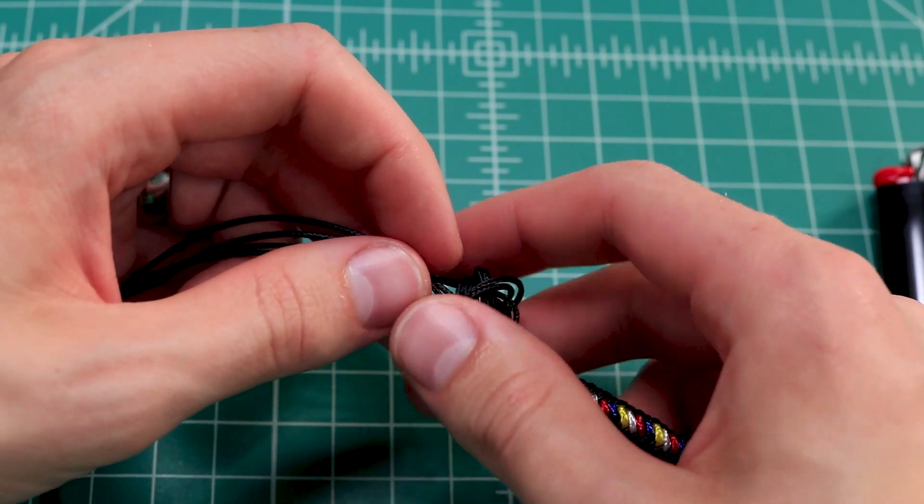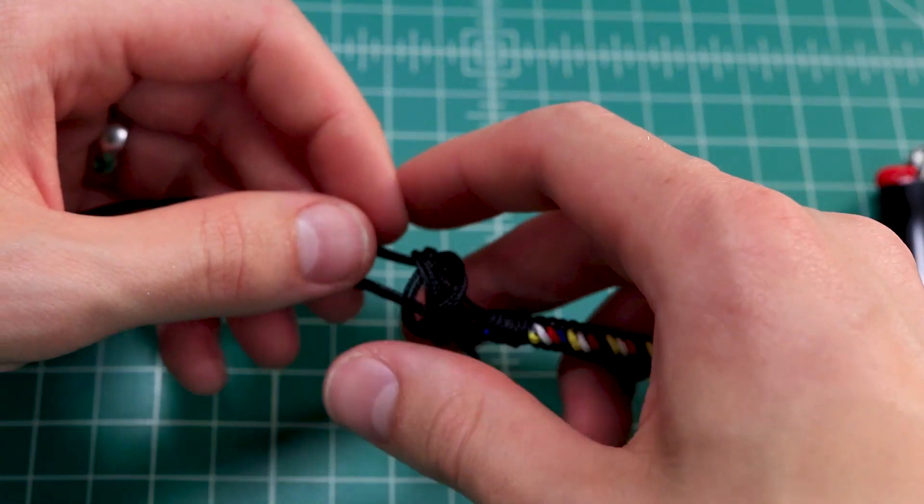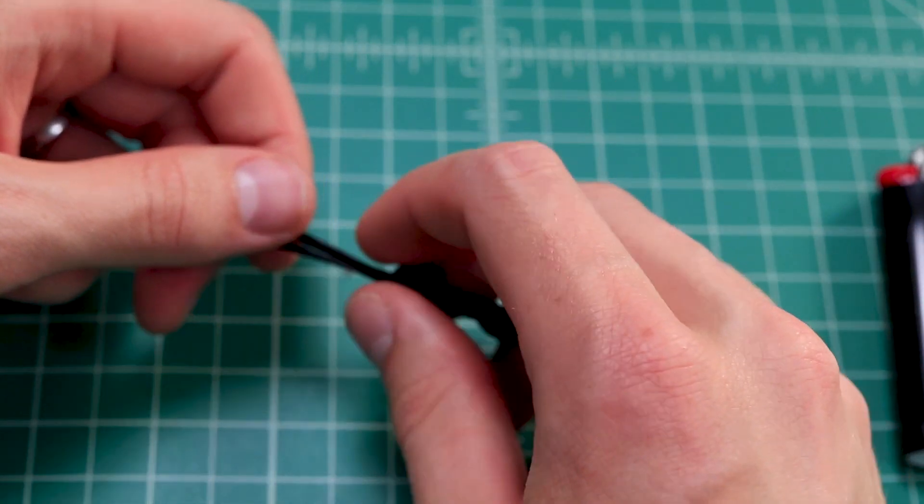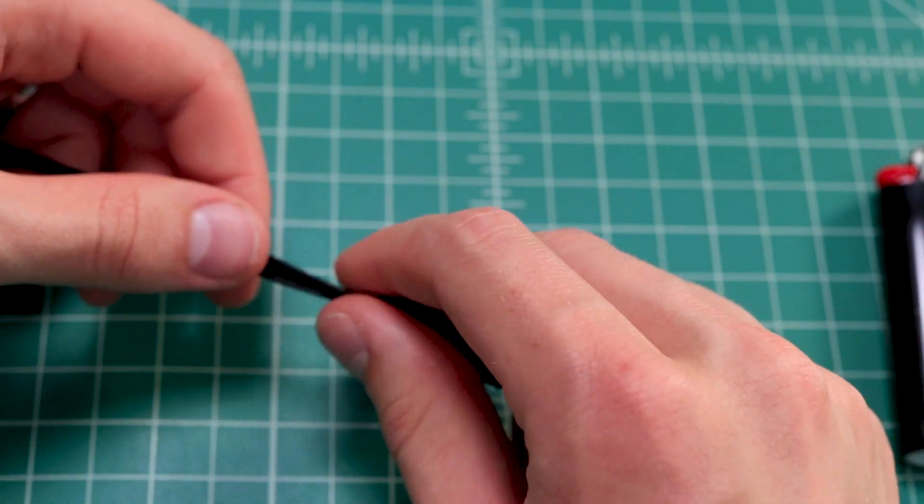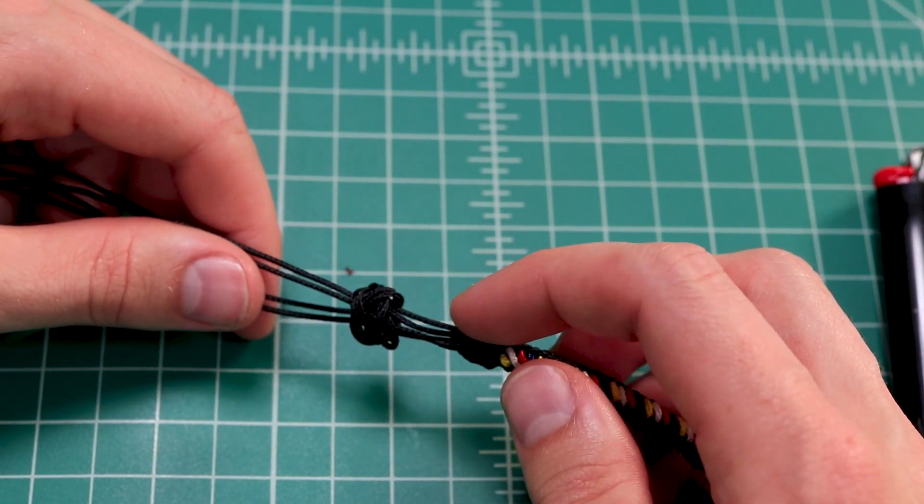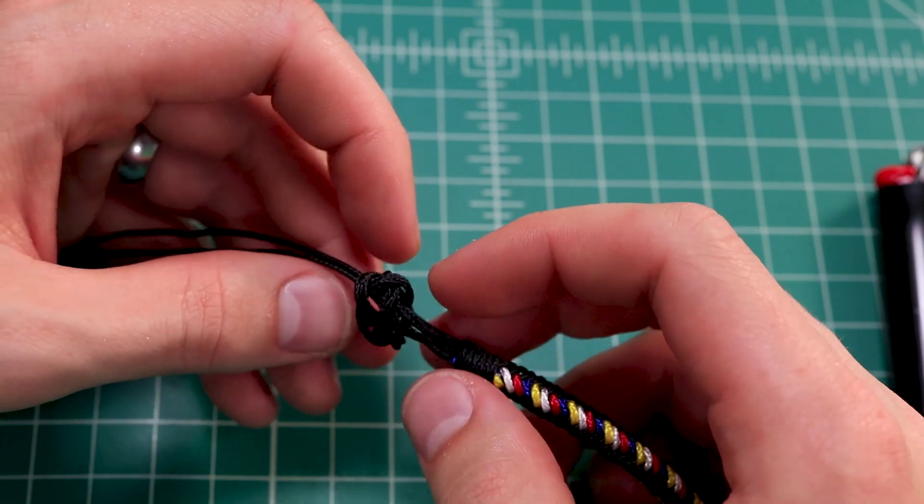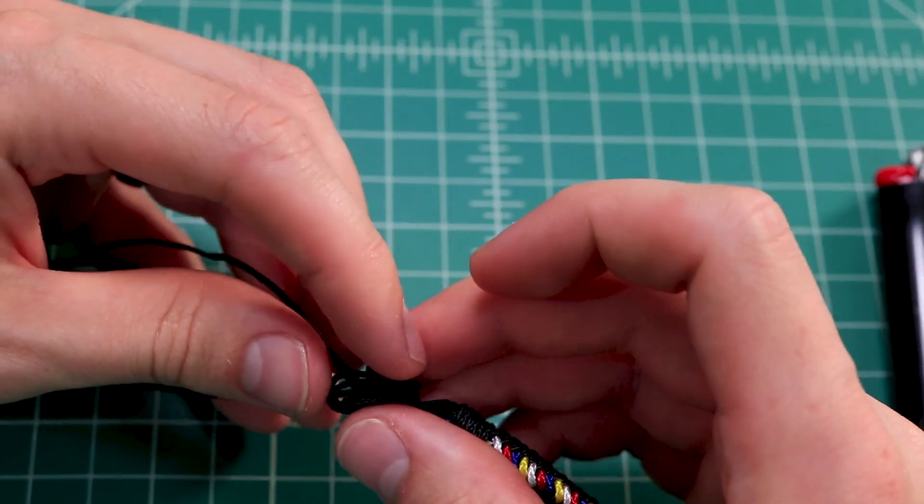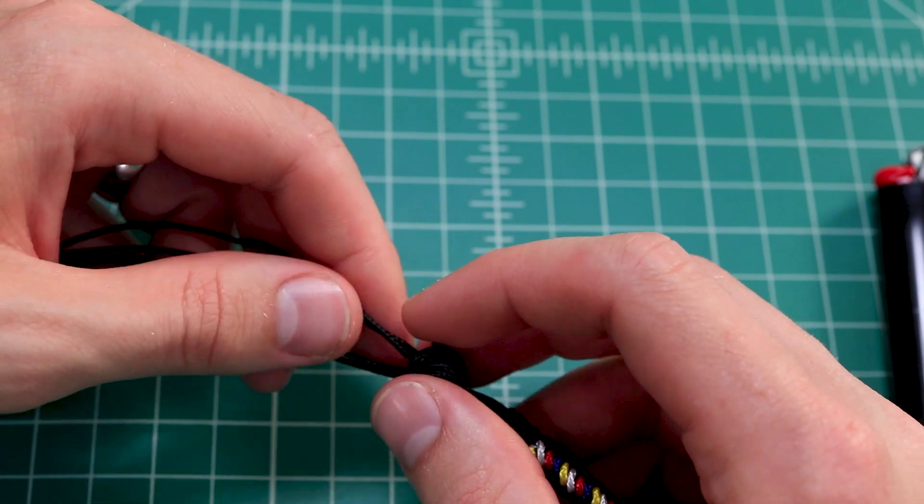Alright, so now we need to tighten that knot down, and we'll do that by gently pulling on the ends and kind of gently pushing this into place. Once you get most of the way tightened down, then you can start feeding the cord through, if you want it closer to the bracelet end. I've got a little bit too much room here, so I'm going to do that. Just feed your slack all the way to the other end.